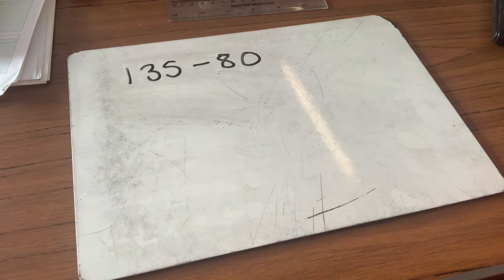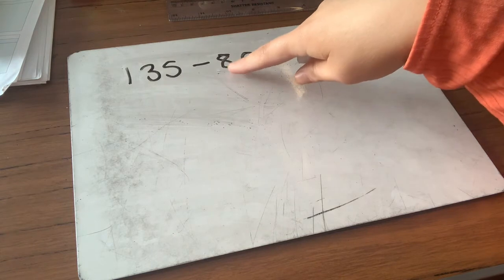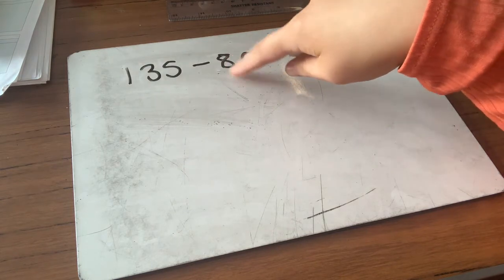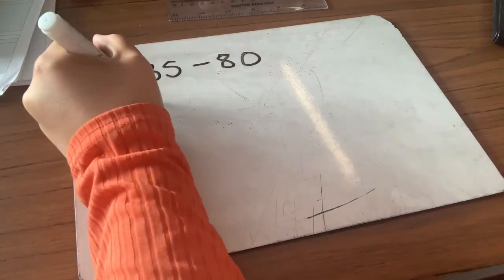Last one for this week. 135 take away 80, so give this one a go. All right, so we can think about it in a couple of ways. We could count up to 100 and then on with another 35. So we could do 20 up to 100, and then add our 35. So 20 and 35 would be 55.